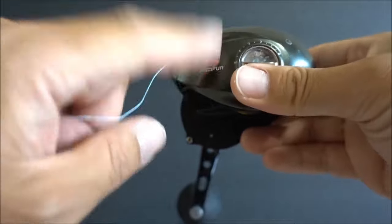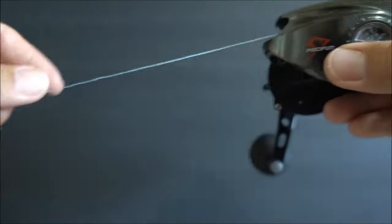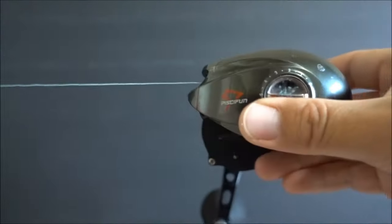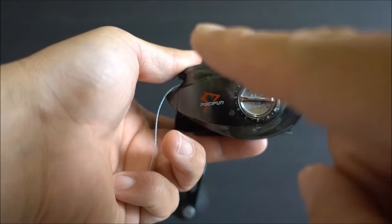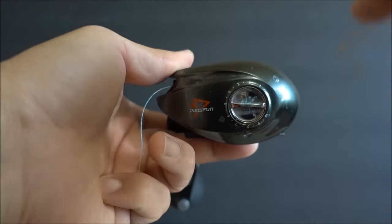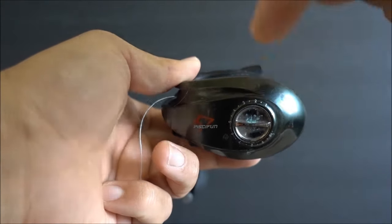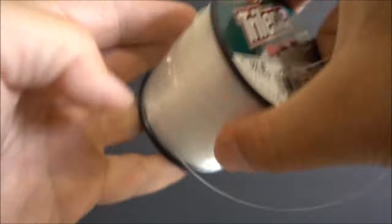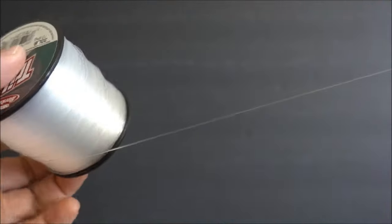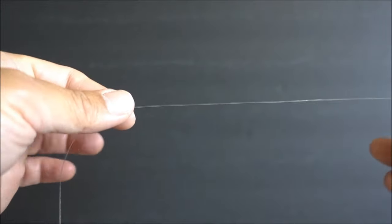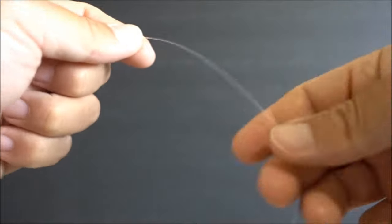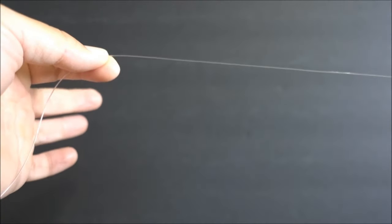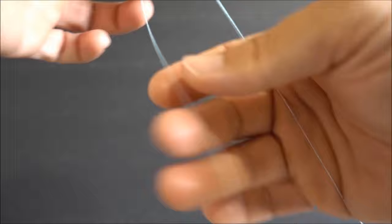Enough talking, let's get into it. So what I got here is a Piscifun Alijos with the 40 pound braided line. By the way, if you guys are interested in Piscifun product, I have 18% discount code down in description. And I'm going to be top shotting 30 pound mono. For my next trip is going to be salmon fishing. So I want that extra stretch of mono rather than the fluoro.